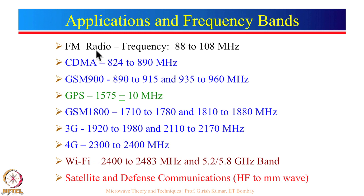Let us quickly look at applications. FM radio frequency band is 88 to 108 megahertz. Various cellular phone bands: CDMA works from 824 to 890 MHz, GSM 900 from 890 to 915 and 935 to 960 MHz — one part is used for transmit and another for receive. GPS works at 1575 megahertz with a bandwidth of plus/minus 10 megahertz. Wi-Fi is from 2400 to 2483 MHz, and also used at 5.2 to 5.8 gigahertz. There are GSM 1800 band, 3G and 4G as well.